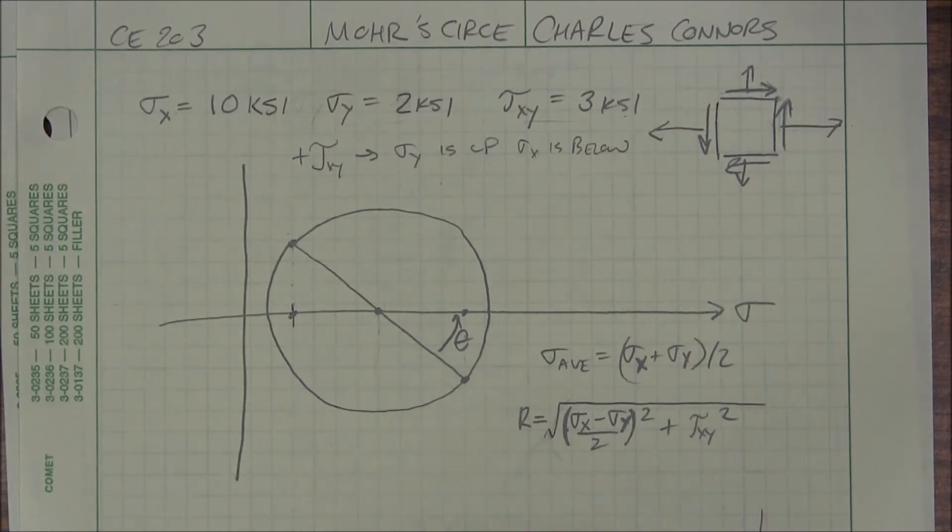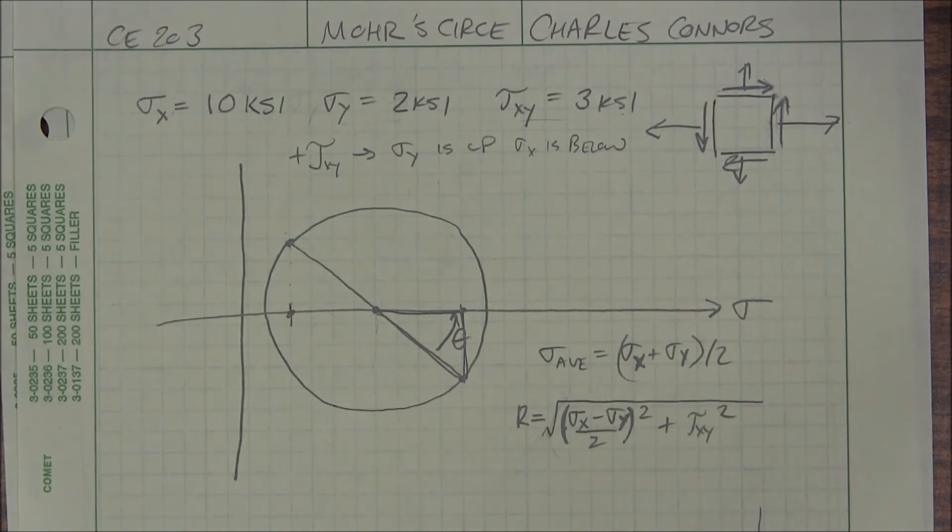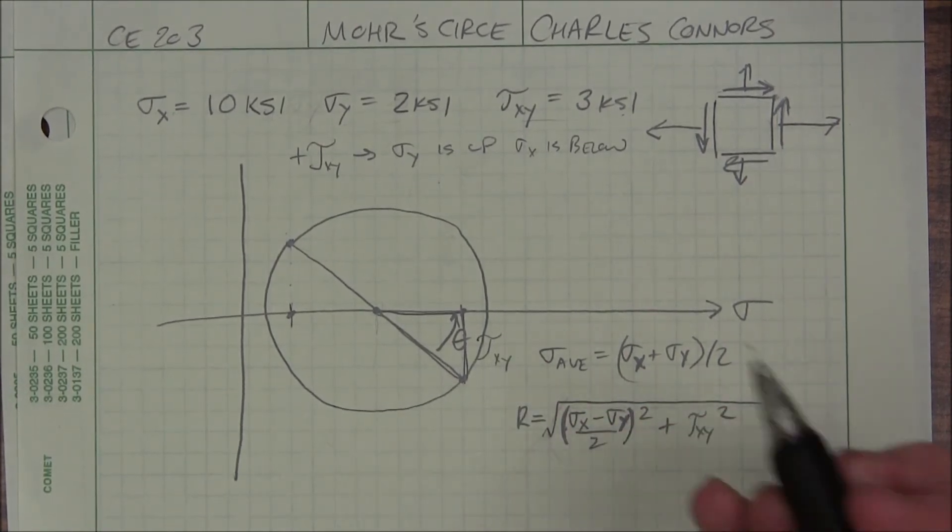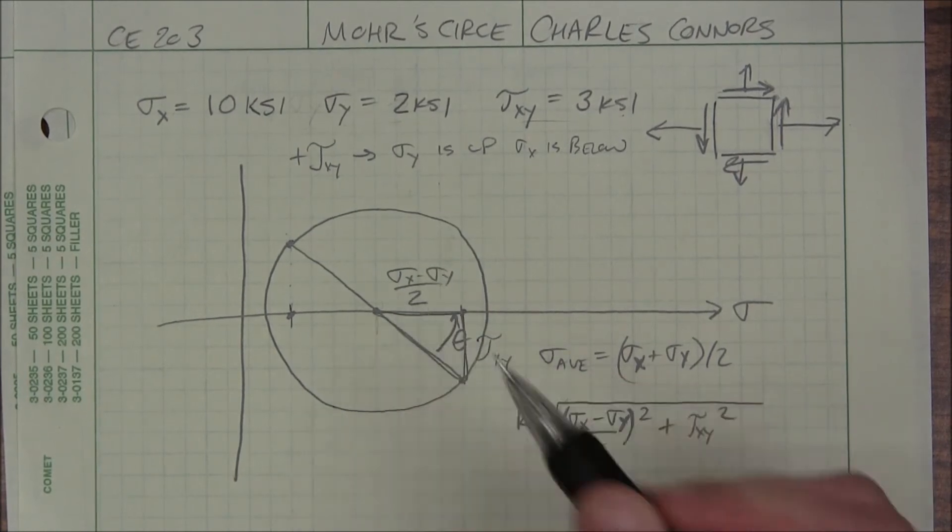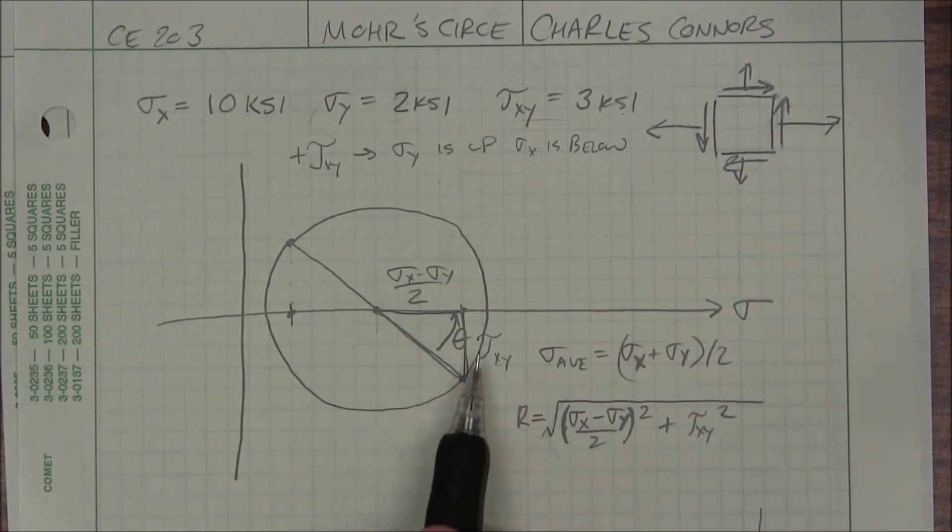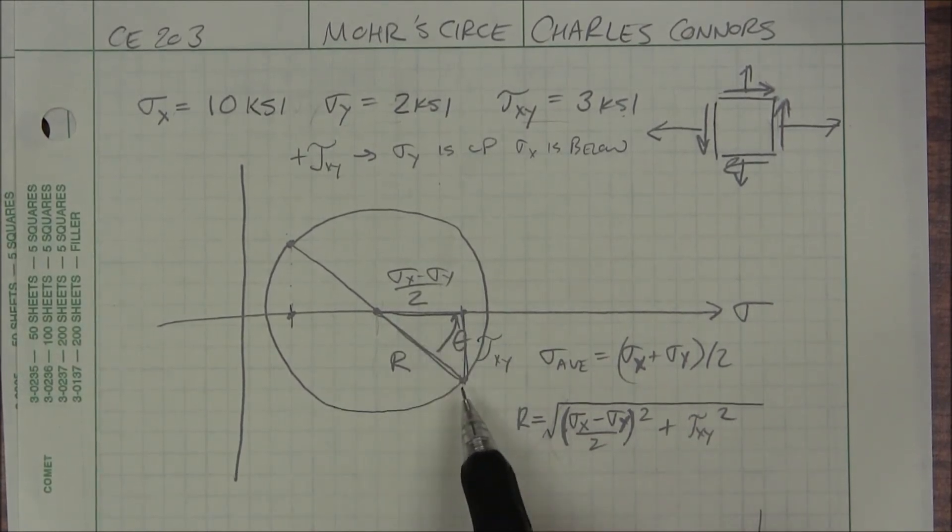And looking at the radius formula here, I have a triangle that I can look at. This is my tau XY. This is sigma X minus sigma Y divided by 2. And I just do the Pythagorean theorem to find what my radius is.